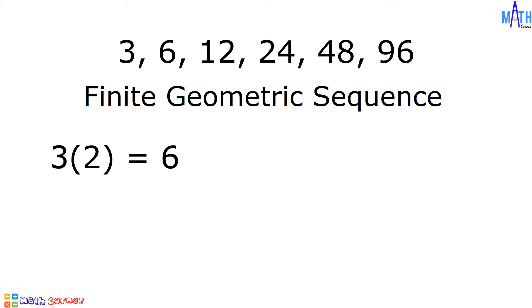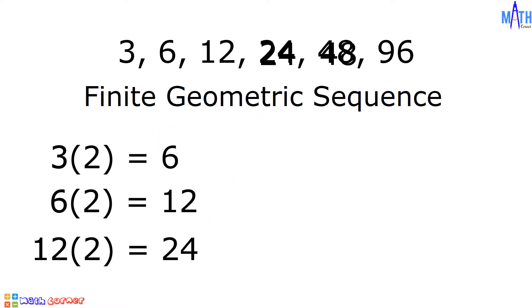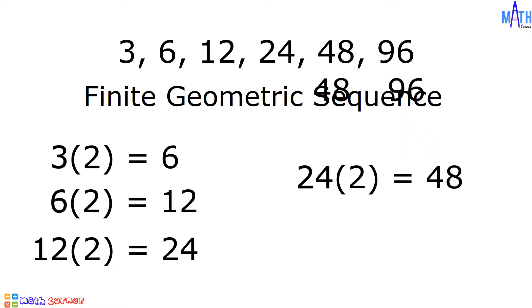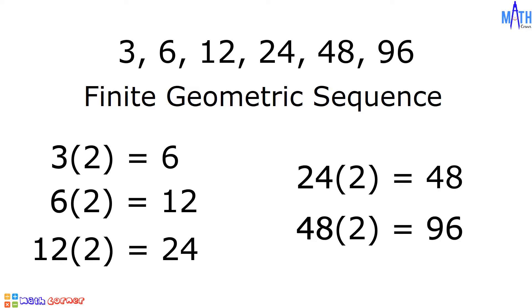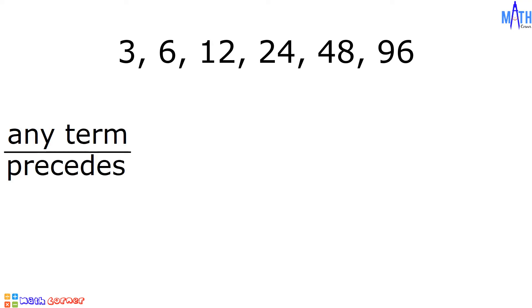3 times 2 is equal to 6. 6 times 2 is equal to 12. 12 times 2 is equal to 24. 24 times 2 is equal to 48. And 48 times 2 is equal to 96. The constant number to be multiplied is equal to 2, and that is the common ratio. To determine the common ratio, we will divide any term by its preceding term.